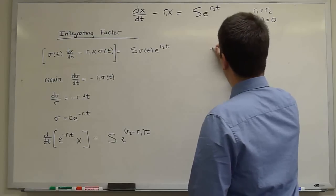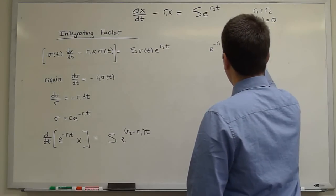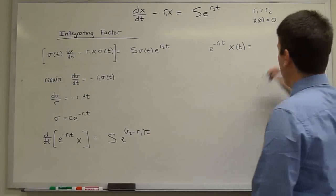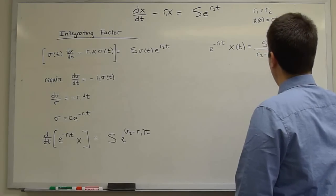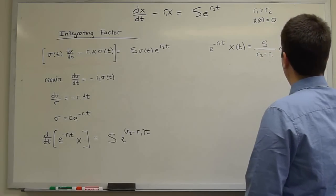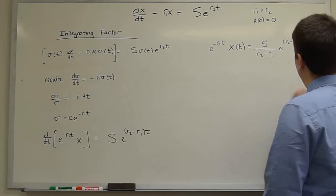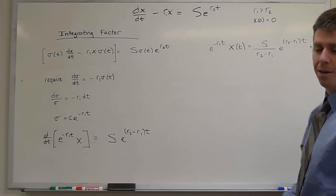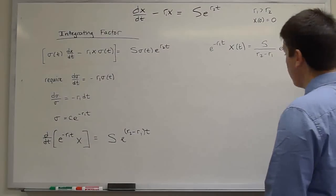We get e to the minus r1 t times x of t is, when we integrate this, we get s over r2 minus r1 e to the r2 minus r1 t plus c, the integration constant. I shouldn't call it undetermined because that will confuse you with the method of undetermined coefficients.